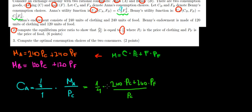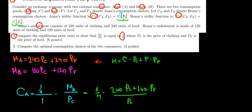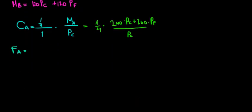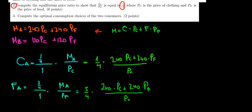Now let's do the same for Anna's food. Anna's food consumption equals the share she spends on food — the exponent 3 over 4 divided by the total 1 — times her income spent on both goods, divided by the price of food. So it's 3 over 4 times (240 times the price of clothing plus 240 times the price of food), divided by the price of food.